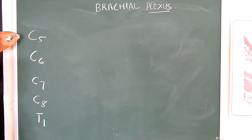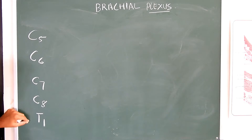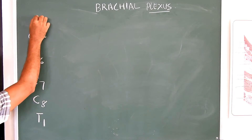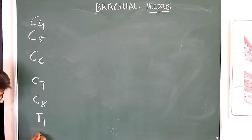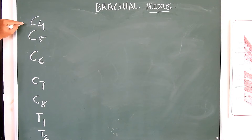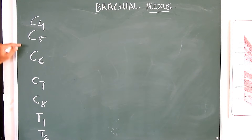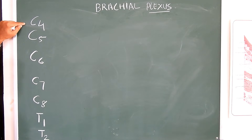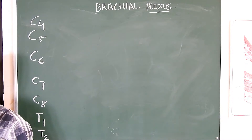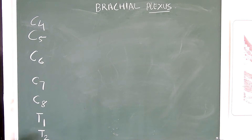The brachial plexus roots are from C5 to T1, with minor contributions from C4 and T2. When the contribution from C4 is larger and T2 is absent, it is known as a pre-fixed brachial plexus. When C4 is absent and the T2 contribution is larger, it is known as a post-fixed brachial plexus.